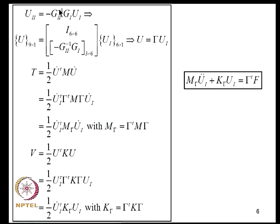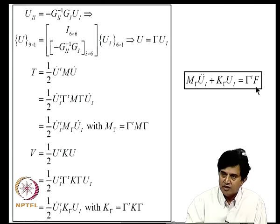With U = Gamma * U1, the kinetic energy becomes (1/2) * U1_dot^T * (Gamma^T M Gamma) * U1_dot, where M_gamma = Gamma^T M Gamma is the constrained mass matrix. Similarly the potential energy gives K_gamma = Gamma^T K Gamma. The equation of motion after imposing constraints is M_gamma * U1_ddot + K_gamma * U1 = F_gamma, and this is the equation we need to solve.